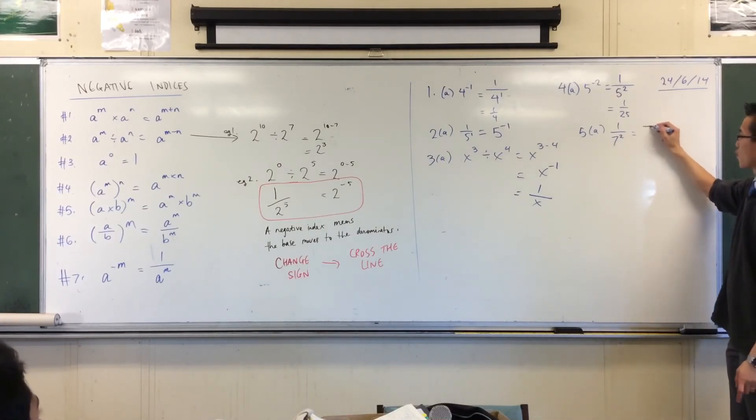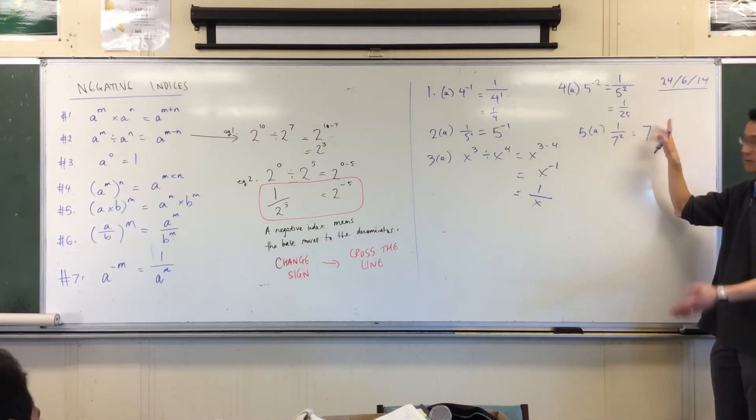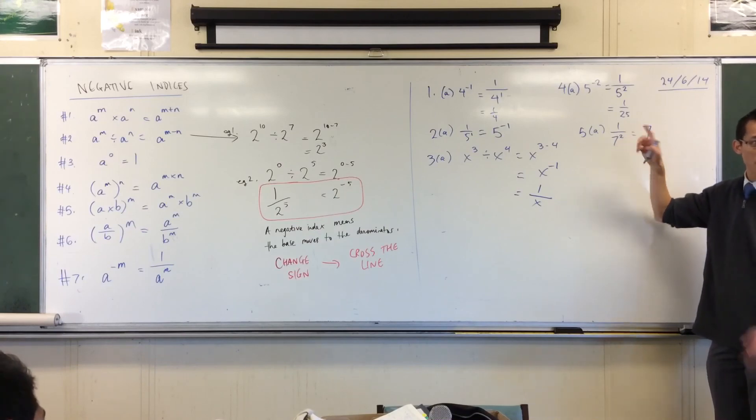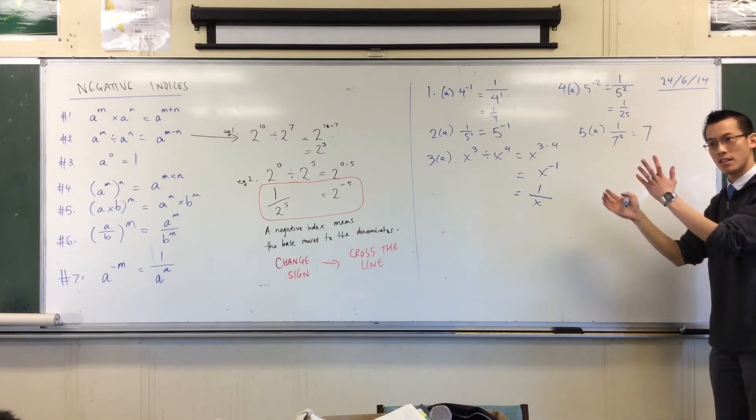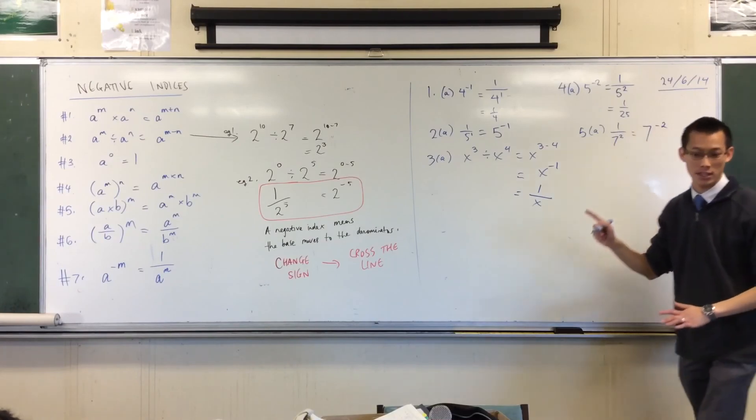I'm going to cross the line. I'm now on the numerator, so I should change the sign from positive 2 to negative 2. There you go, negative index form.